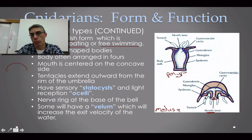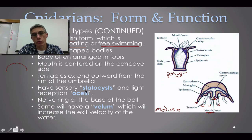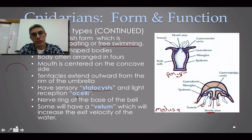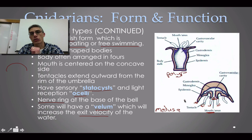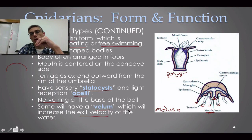The tentacles extend outward from the rim of the umbrella and can have sensory receptors on them. One type of sensory receptor is statocysts, which help the animal orient itself in its environment. They can also have light receptors called ocelli, which you'll be able to see when you look at the jellyfish in lab. There is also a nerve ring at the base of the bell. Some medusae have an additional structure called a velum, which increases the exit velocity of water, allowing those jellyfish to pulsate and move faster. Those without a velum simply float through their environment.